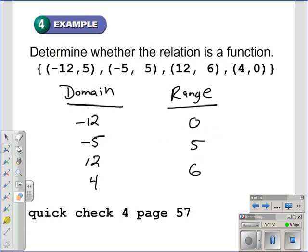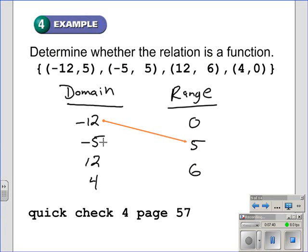We use our arrows to pair up the values. Negative 12 is paired with 5. Negative 5 is paired with 5. 12 is paired with 6, and 4 is paired with 0.